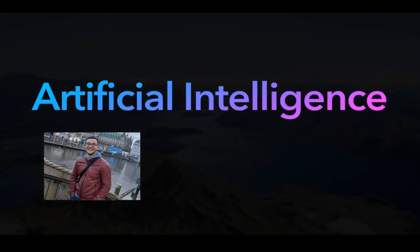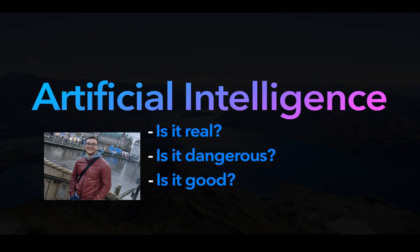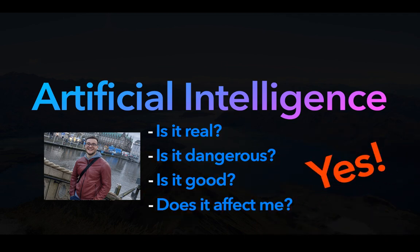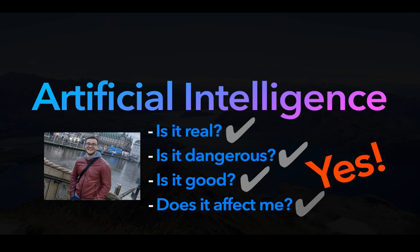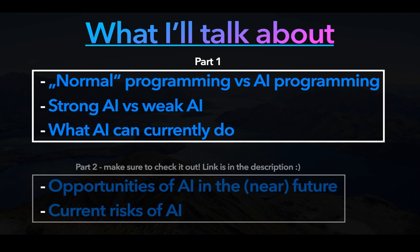What's up YouTube, this is Per and you have almost certainly already heard the term Artificial Intelligence. You're probably wondering: is it real? Is it dangerous? Or is it good? And does it even affect me at all? Well, yes. It's real without any doubt. It can be dangerous, but it also can do many good things. And if you are using the internet — and watching this video means you are — it does affect you. That is exactly why it is so important to talk about the opportunities as well as the risks that come with this somewhat new technology. This first of two videos will give you a basic introduction into what AI actually is and can do. Timestamps are in the description, and in the second video we'll talk about opportunities and risks.